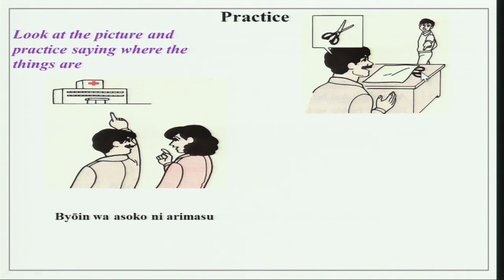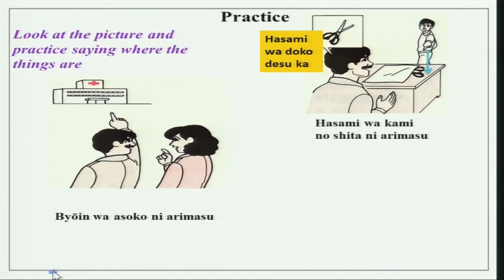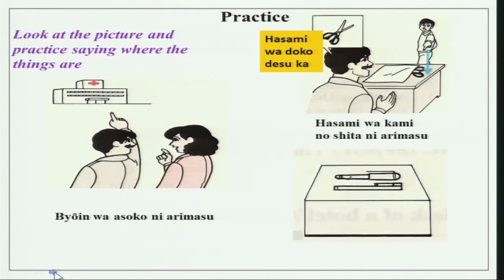The next picture has a gentleman thinking of scissors — hasami — and he wants to ask where is the hasami? Hasami wa doko desu ka? Hasami wa kami no shita ni arimasu. Kami is paper — it is under the paper. Another picture shows pens on a table. Pen wa doko desu ka? Or pen wa doko ni arimasu ka? The answer: pen wa tsukue no ue ni arimasu.